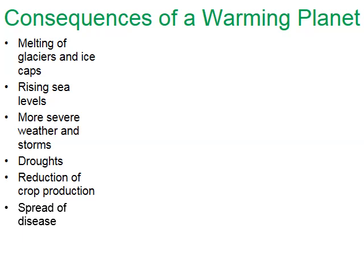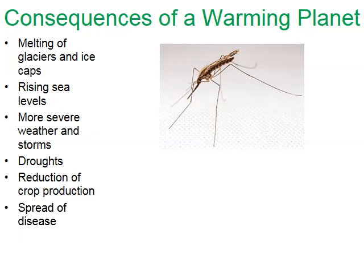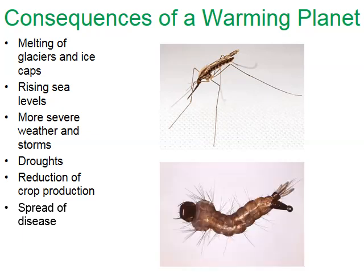Yet another consequence of a warming planet is the spread of disease. For example, the mosquito that causes malaria typically lives in warmer climate areas. If Earth's climate becomes warmer overall, you would expect this mosquito to spread outward, take advantage of new habitats, and spread malaria to areas of the world that aren't used to seeing it.